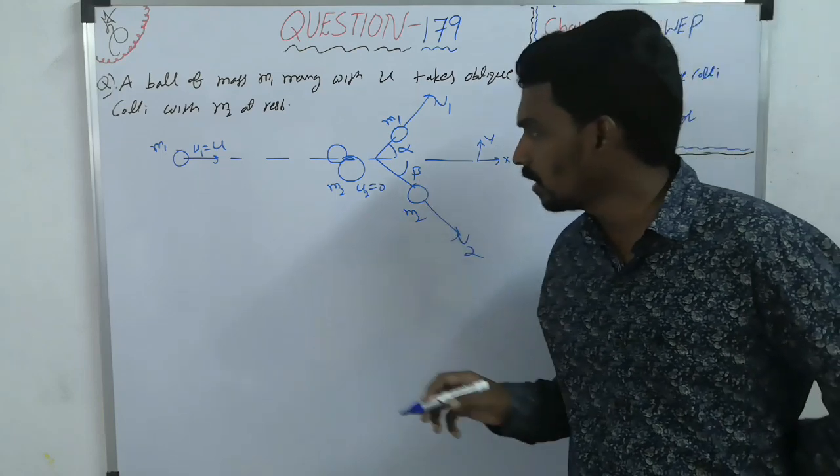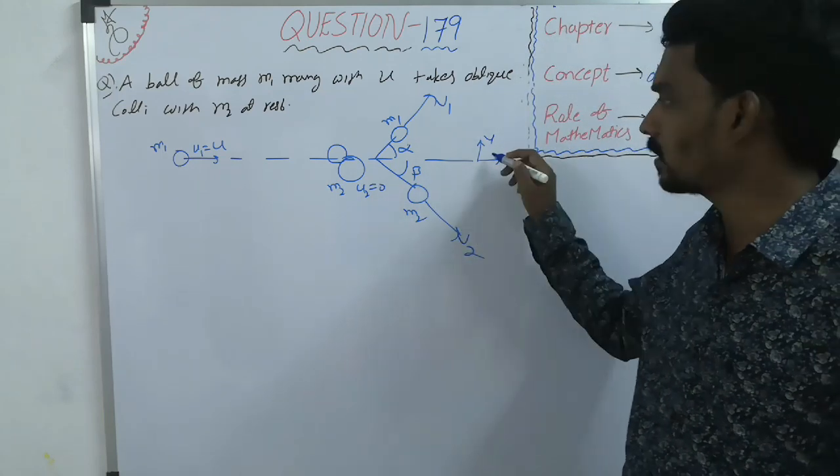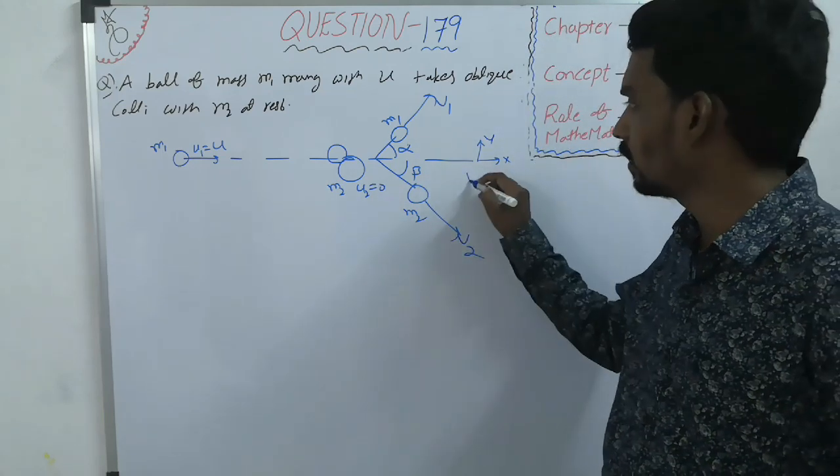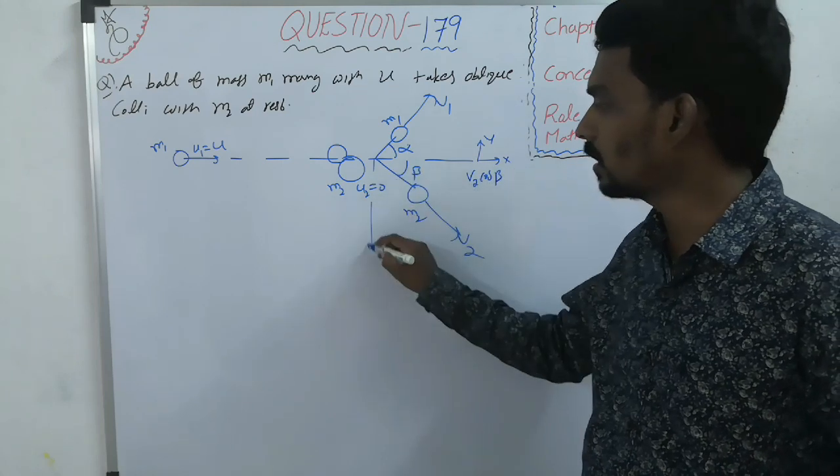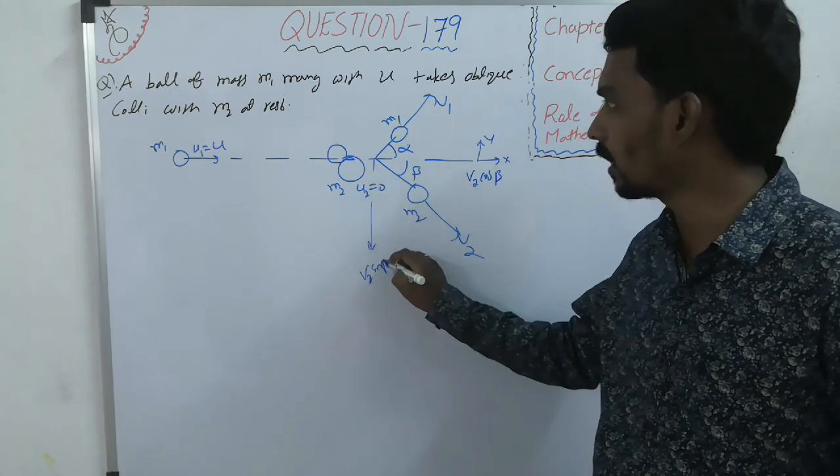So divide the velocity components along X and Y like this is V2 cos beta and this is V2 sin beta.